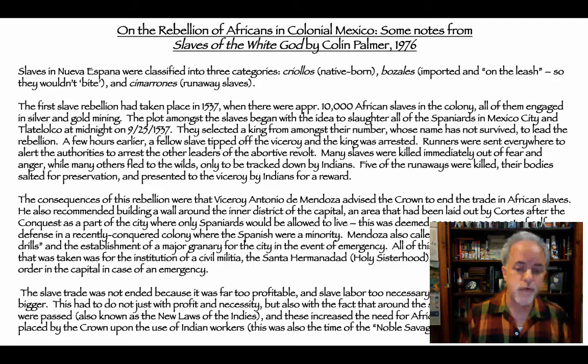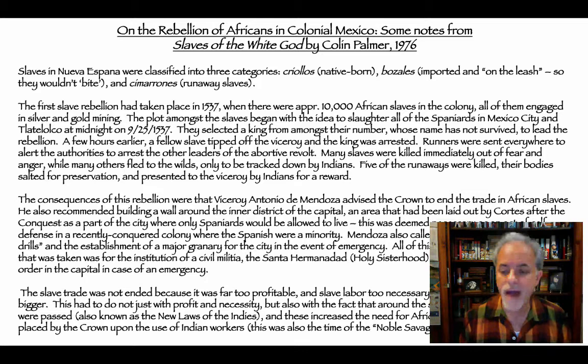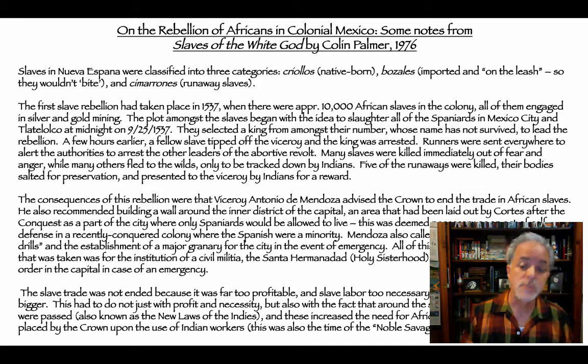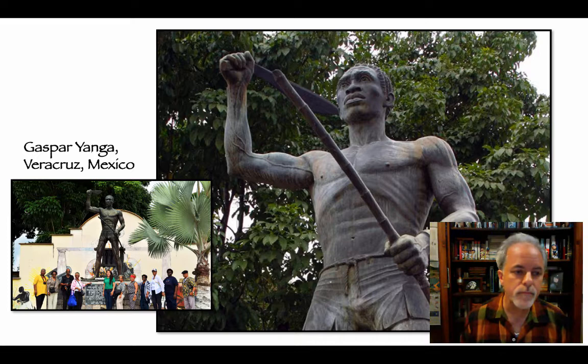The consequences of the rebellion were that Viceroy Antonio de Mendoza advised the crown to end the trade in African slaves. He also recommended building a wall around the inner district of the capital — an area laid out by Cortez as a place where only Spaniards would live. This was necessary as an act of self-defense in a recently conquered colony where the Spanish were a small minority. One measure taken was to institute a civil militia, the Santa Hermandad or Holy Sisterhood, to maintain law and order in the capital. But the slave trade was not ended — it only grew bigger.